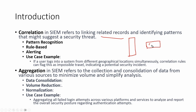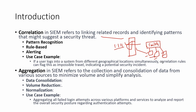Before understanding use cases, let's understand the basics of correlation and aggregation. Correlation is a process referring to linking related records and identifying patterns that might suggest a security threat. For example, we have a firewall, a switch, and Systems A, B, and C. An IP called 1.1.1.1 bypasses the firewall and moves to A, B, and C. We collect information from all sources — that is collection. We then aggregate — that is aggregation. But to link that aggregated information, we use correlation. For instance: 1.1.1.1 identified on the firewall at 10:40 PM, in System A at 10:41, in System B at 10:42, and in System C at 10:43.